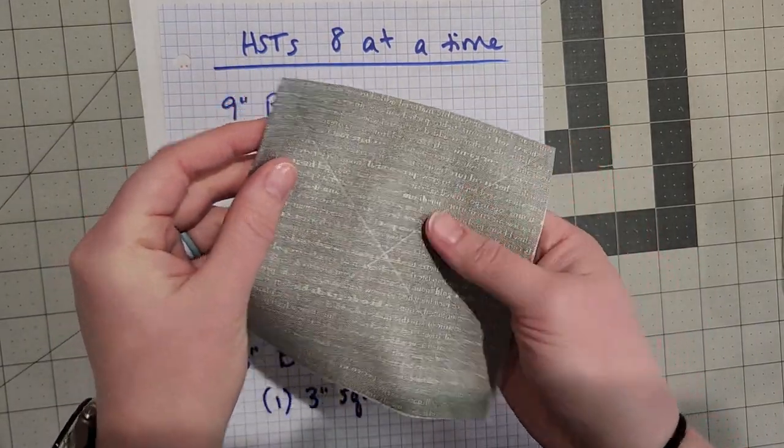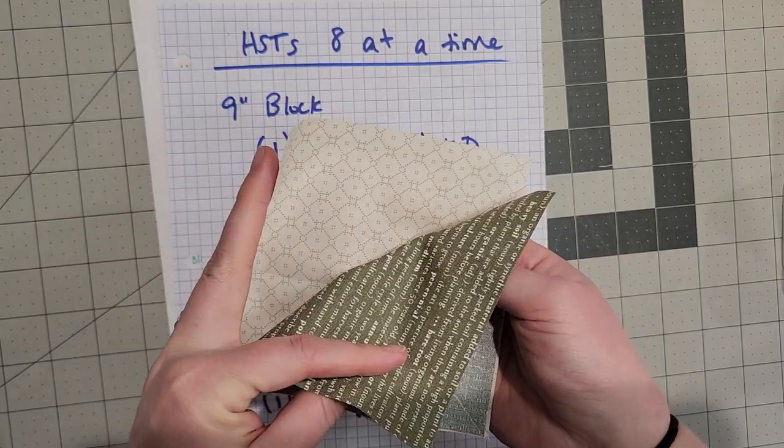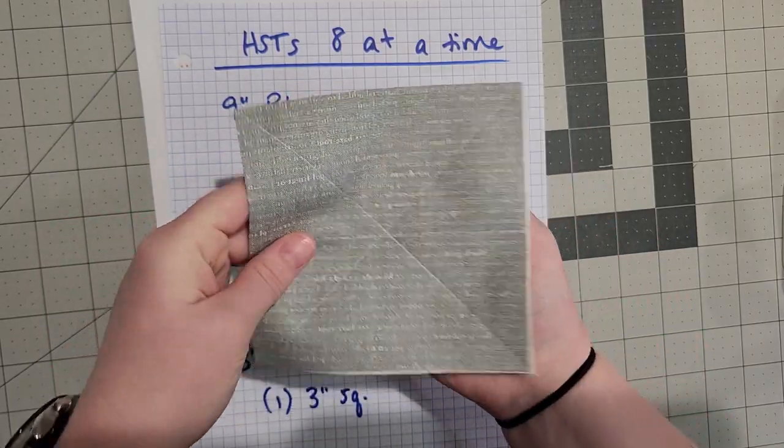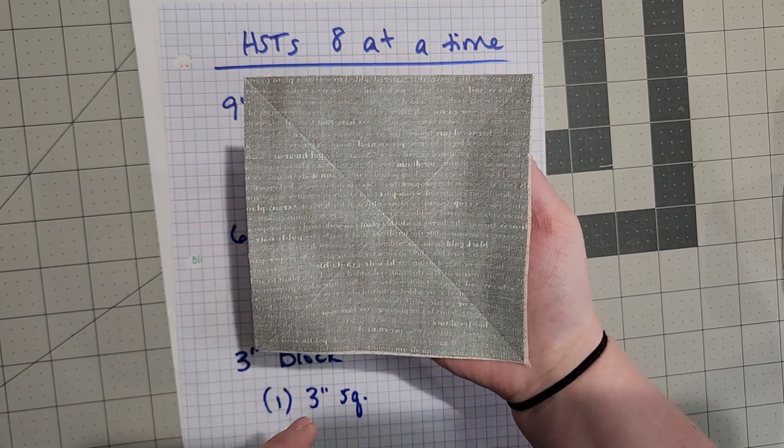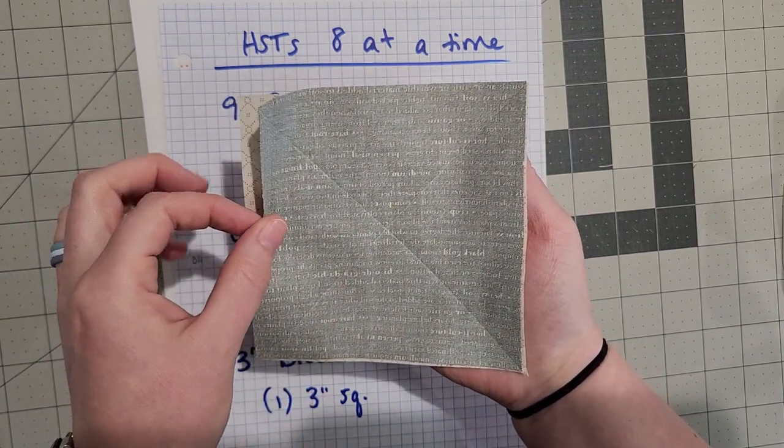So I've got my five inch squares here and I've already marked on the diagonals. I'll make sure to link here the full tutorial of eight at a time HSTs that I have done before.